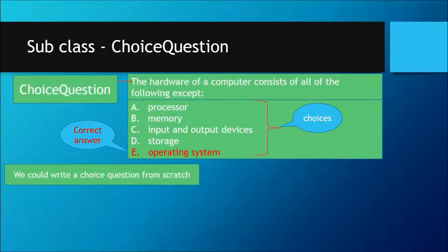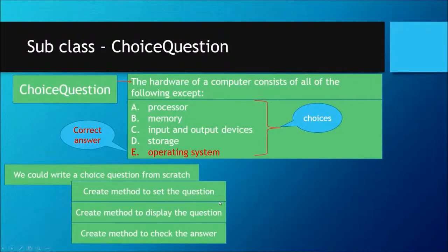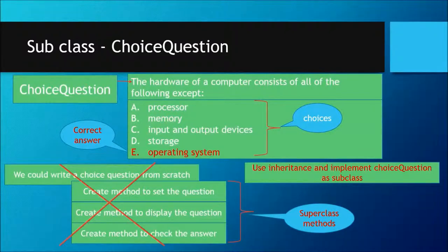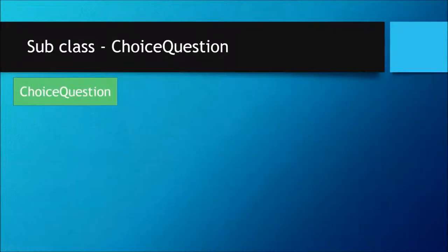To create a ChoiceQuestion class, we could write it from scratch — creating methods to set the question, display the question, and check the answer. But wait, aren't these methods already available in our superclass? We created a Question superclass and these methods are already provided there. So we're not going to create this class from scratch; we're going to use inheritance and implement ChoiceQuestion as a subclass that inherits from the Question class.